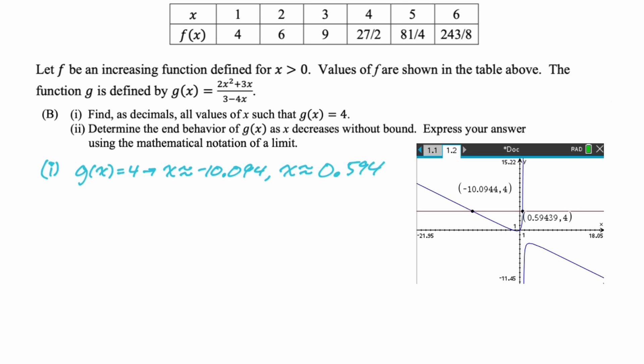The next question is determine the end behavior of g of x as, well, I guess I should say the answers. The answers were approximately negative 10.094 and approximately 0.594. You're going to round to three decimal places unless otherwise specified. So mark that down in your brain. Always three decimals unless otherwise specified. Part two. So B, part two. Determine the end behavior of g of x as x decreases without bound. Express your answer using the mathematical notation of a limit. So it's not clear to me if I can just use a limit or if I have to say words as well. So I'm going to do both of those. But I actually personally think that just writing down a limit would work here. So if x is decreasing without bounds, that would mean that we are approaching negative infinity. So we're going to write the limit. As x approaches negative infinity of g of x, you've got to put that function there to get the notation correct.